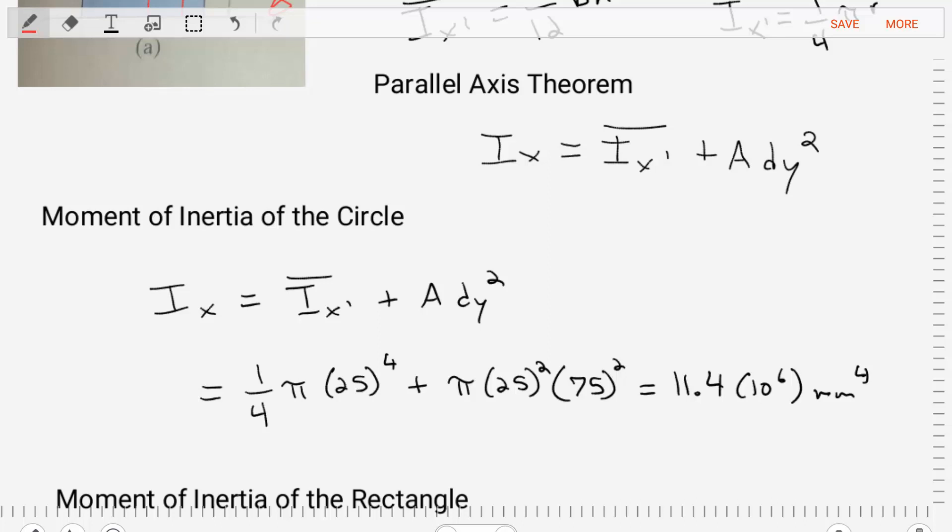We're going to apply the parallel axis theorem, where we have the moment of inertia from the centroid for the circle. So we put that equation in, and then we put the area of the circle, pi times r squared, and then the distance dy squared between the axes, which is 75. When we plug all of that in, we find that the moment of inertia of the circle from the x-axis is 11.4 times 10 to the 6 millimeters to the power 4.